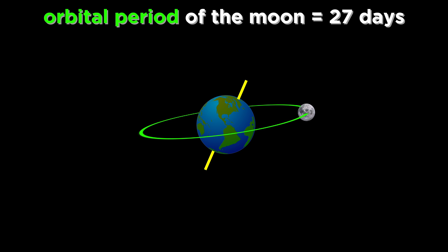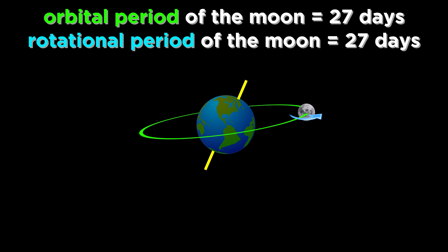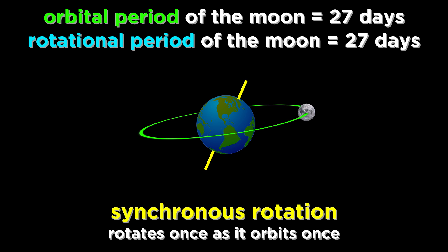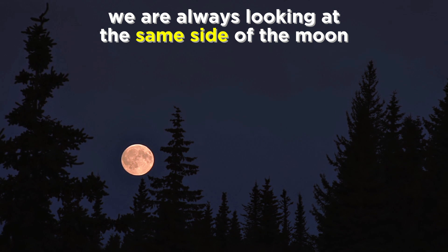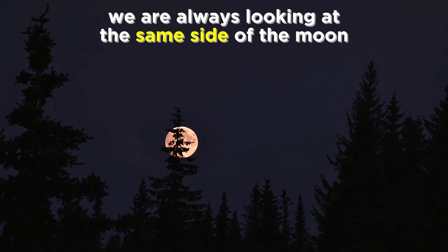The moon orbits the Earth once every twenty-seven days or so, and its rotational period is exactly the same as its orbital period, meaning it rotates on its own axis once in the same time that it takes to orbit once. This is called synchronous rotation, and it is the reason that we are always looking at the same side of the moon.